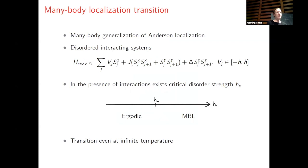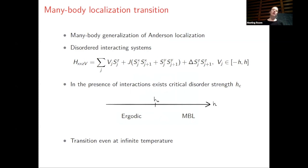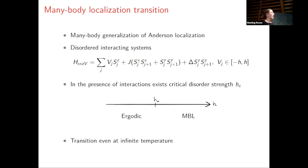To put us all on the same page, I'll make a short introduction to many-body localization. This can be seen as a generalization of Anderson localization to an interacting system. It happens in systems in the presence of interaction and disorder. Unlike Anderson localization, MBL happens already in 1D only at sufficiently strong disorder. One therefore observes a transition between a system behaving as ergodic versus localized at a critical disorder strength. What's peculiar about this transition is that, unlike other transitions, one can observe it even at infinite temperatures, since the nature of eigenstates changes throughout the whole spectrum.